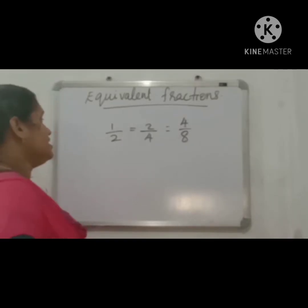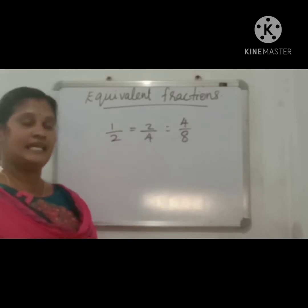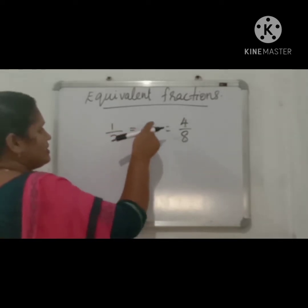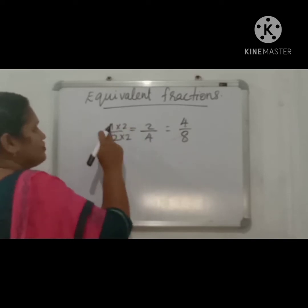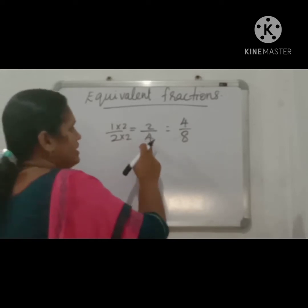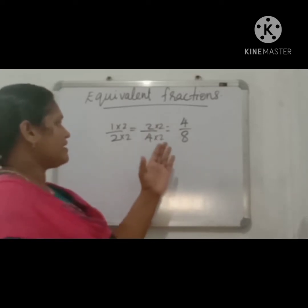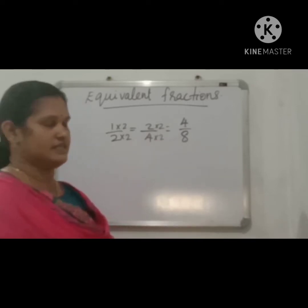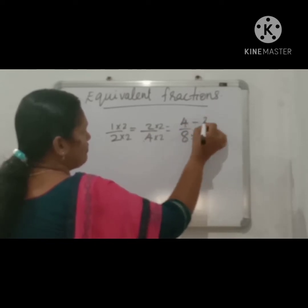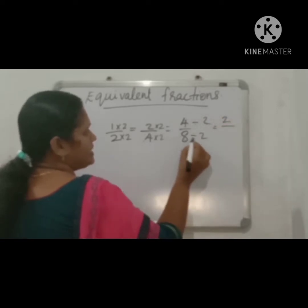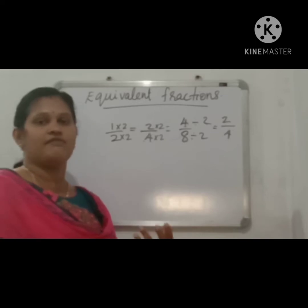To get the equivalent fraction, we should multiply or divide both sides — that means the numerator and denominator — with the same number. For example, 1 by 2 is equivalent to 2 by 4. Multiply both sides by 2: 1 into 2 equals 2, 2 into 2 equals 4. In this way, we can find the equivalent fraction of any fraction.